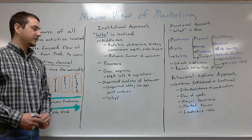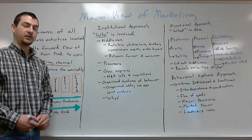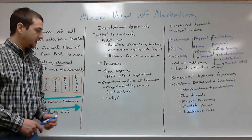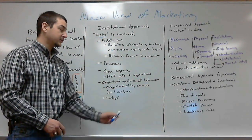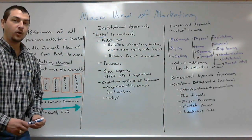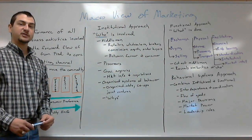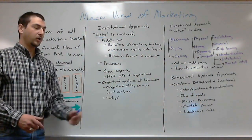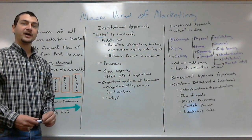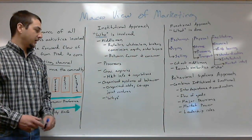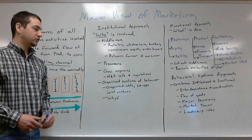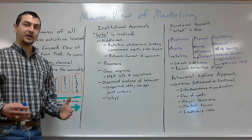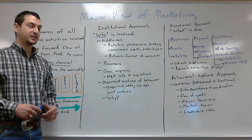Then we have these organized systems of behavior. These are often groups such as organized markets and co-ops. Just about every small town is going to have their own farmer's co-op, and those co-ops are an organized system of behavior. You also have joint ventures, alliances, and things of that nature — all often considered organized systems of behavior.